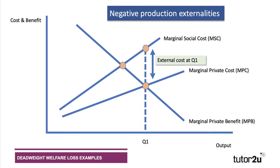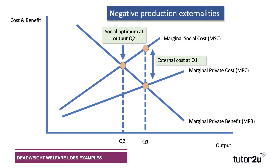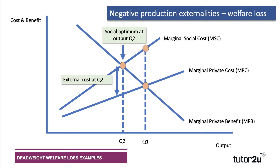Ideally, if we took the externalities into account, the equilibrium would be to the left of Q1 — that would be an output of Q2, where the social cost meets the benefit curve. In other words, we've factored in the negative production externalities. But in the absence of that, if the market is not at a social optimum of Q2, the market may well end up at a private optimum of Q1, in which case output is above the level needed for a social optimum.